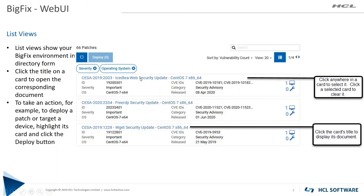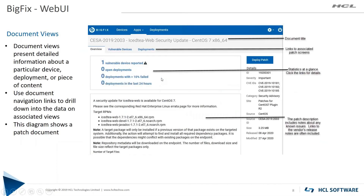If I click on one of these patches, I get more detailed information. I can see that this particular update is comprised of three RPMs, with a bit of information about each RPM. You get to see what CVEs are impacted by this and the size of the package.